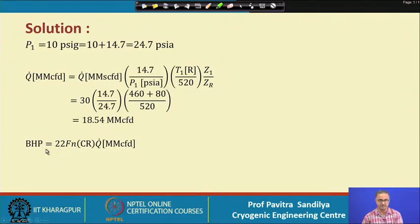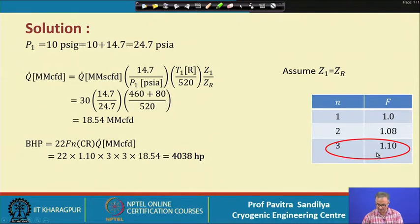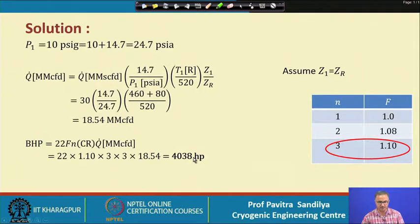We then use the expression for brake horsepower (BHP). From a table giving different values of the factor F for different numbers of stages, for 3 stages we get F = 1.10. Plugging in F = 1.10, N = 3, the compression ratio CR, and the flow rate Q from the previous expression, we arrive at the final value of the brake horsepower for this compression.